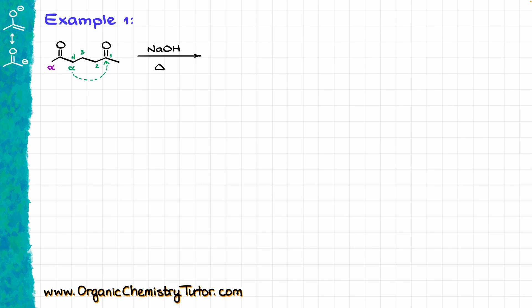The trick with intramolecular aldol condensations is that not every enolate is going to give you a good or desirable product. The key is to look at the size of the ring you are going to be making. If I take the green enolizable position and enolize that, the enolate gives an attack on the carbonyl yielding a 4-membered ring, which is pretty unstable. However, if I choose the purple position, that gives me a 6-membered ring. When it comes to ring sizes in cyclization reactions like intramolecular aldol condensation or Dieckmann condensation, we typically go with 5-, 6-, or 7-membered rings and not 3- or 4-membered rings.